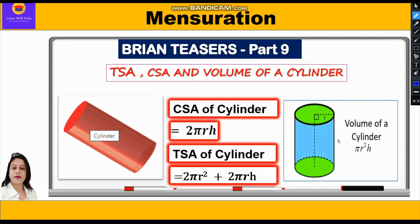The curved surface area of the cylinder, which is the circumference of the base into height, is given by the formula 2πrh. The total surface area of the cylinder is the sum of the two circular bases and the curved surface area, so we can write 2πr² + 2πrh. The volume of the cylinder is the area of the base into height, which is πr²h.